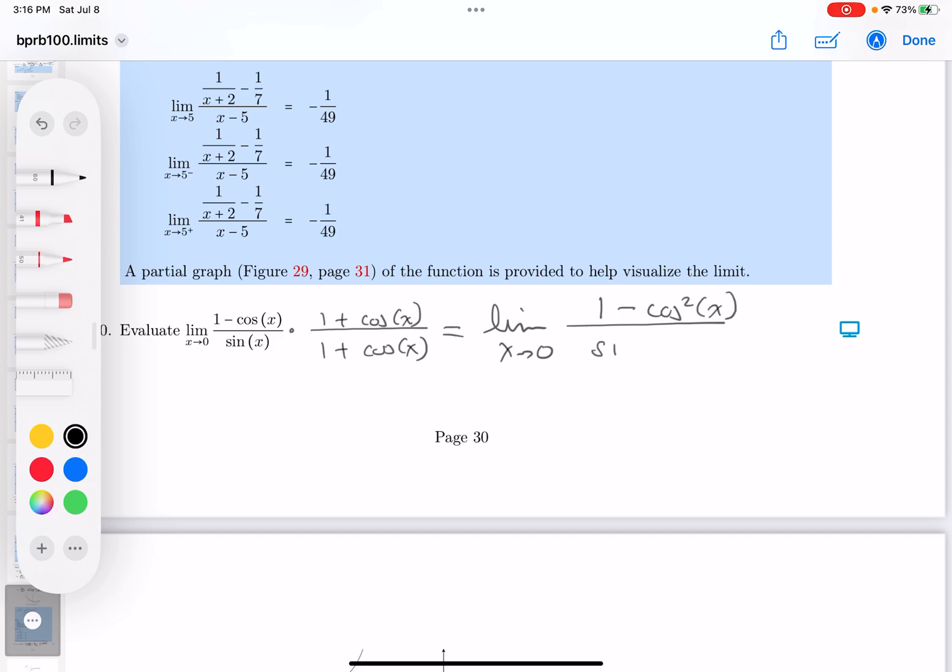I'm not going to multiply the bottom out, by the way. I'm looking for a cancellation. And you get one plus cosine of X over here.